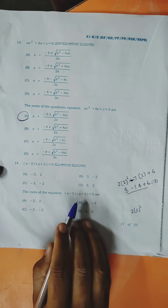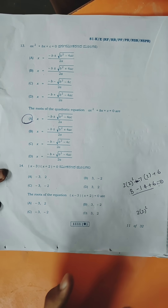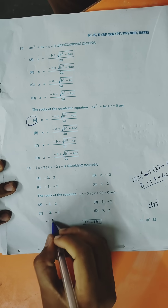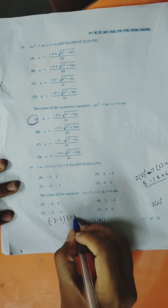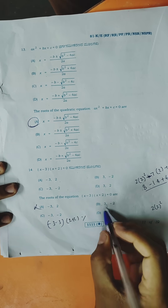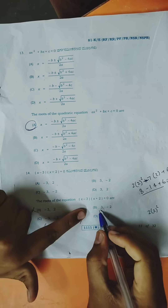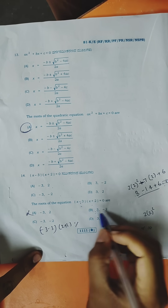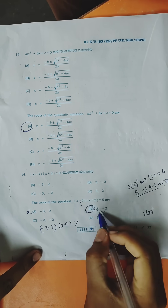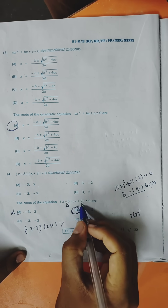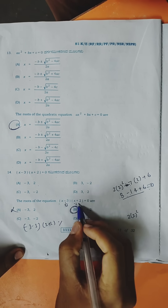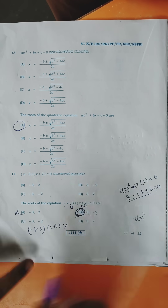Thirteenth question: direct from model paper — the correct formula gives option A as the right answer. Fourteenth question: roots of the equation — simplify each option. First option: −3 + 2 = 0 ✓; Second option: 3 − 3 = 0, then check second value; Option B gives 0, so option B is the right answer for question 14.